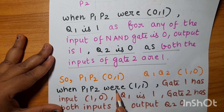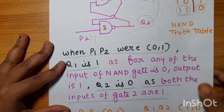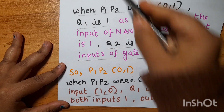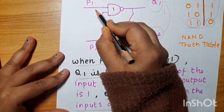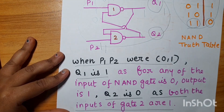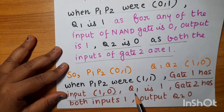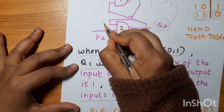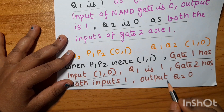When P1,P2 were 1,1: gate 1 has inputs 1 and 0 (from Q2=0), so inputs 1,0 give output 1, meaning Q1 is 1. Gate 2 has both inputs 1,1, so output Q2 is 0.